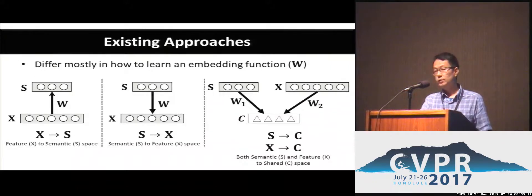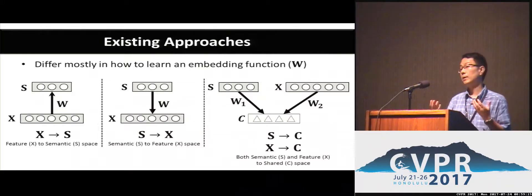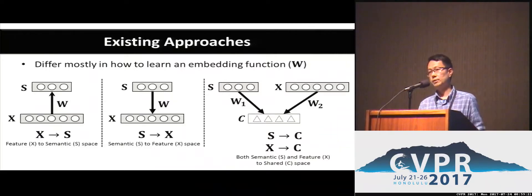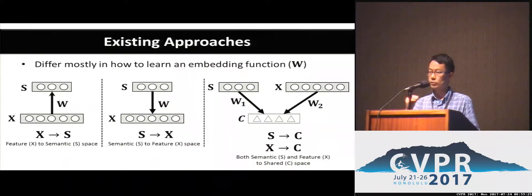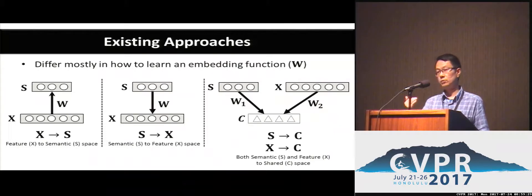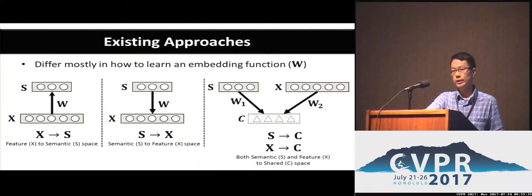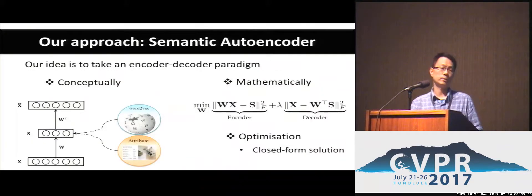If we look at the existing models, almost all of them try to learn a joint embedding space between the visual feature X and the semantic representation of the class name S. They fall into three categories: you either learn a projection from X to S, using S as the embedding space; or the opposite way from S to X; or the third way is to learn a third space C, where both X and S are projected to. Once you've projected both of them into an embedding space, you can do nearest-neighbor search.